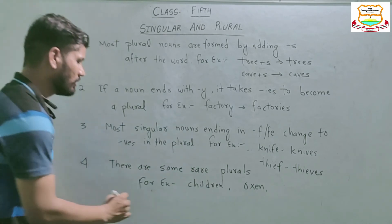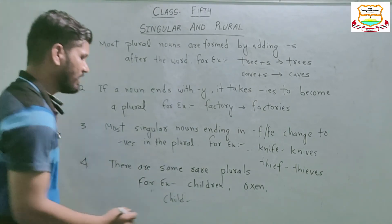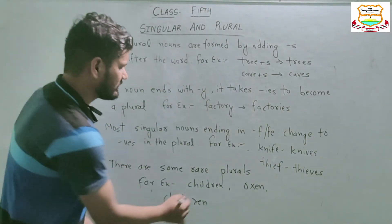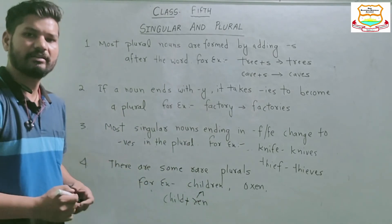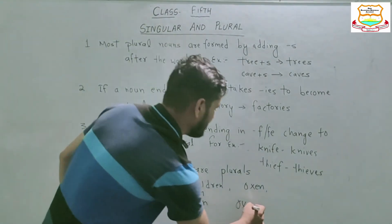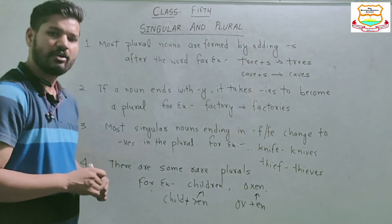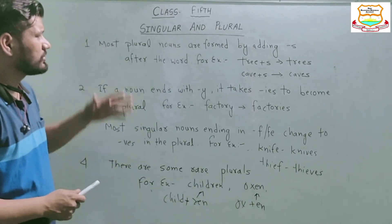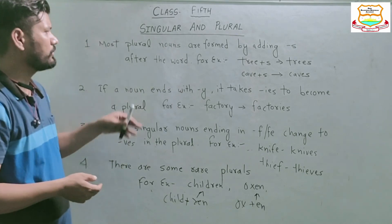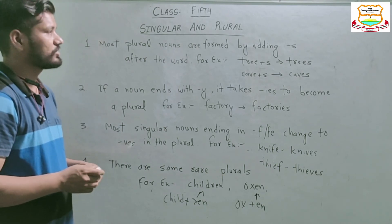The fourth rule covers some irregular plurals. For example, 'child' is a singular noun, and when 'ren' is added to it, it becomes 'children', which is the plural form. Likewise, 'ox' is a singular noun, and when 'en' is added, it becomes 'oxen', meaning more than one ox. There are more rules provided in the notes. That's all for this topic, thank you.